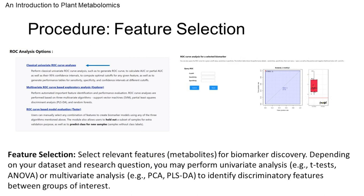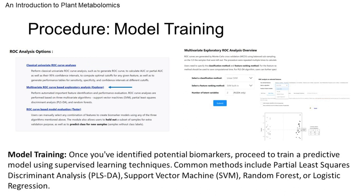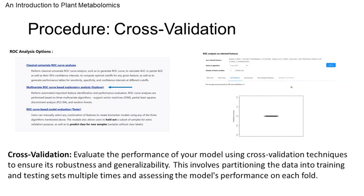With pre-processed data in hand, we can now proceed to select relevant features — metabolites — for biomarker discovery. Depending on our research question, we may perform univariate or multivariate analysis to identify discriminatory metabolites between groups of interest. Having identified potential biomarkers, we can now train a predictive model using supervised learning techniques. Common methods include PLS-DA, SVM, random forest, or logistic regression. To evaluate the performance of our model, we'll employ cross-validation techniques.